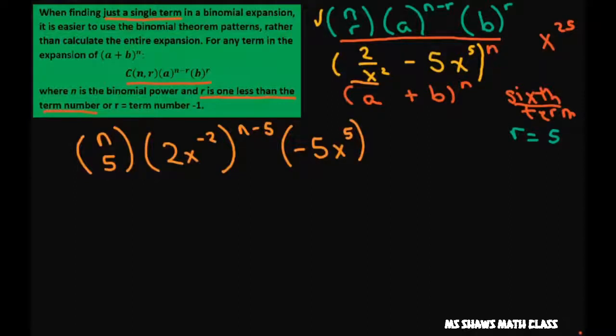And then we have to the 5th here. So what I want to do is look at just my x's here so I can solve for n. So we have x to the negative 2 times n minus 5.